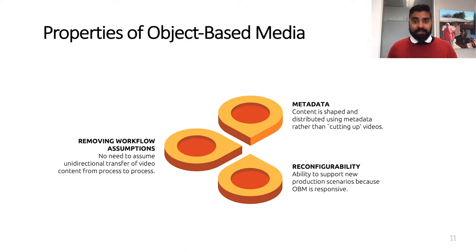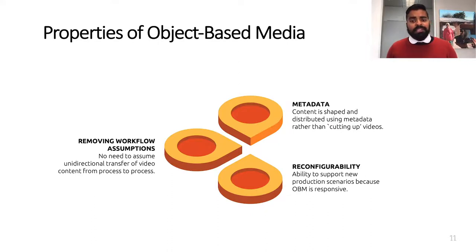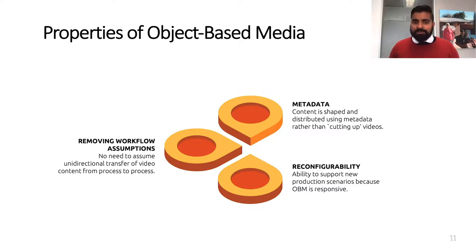Now that we have looked at some characteristics of PV in the field, we turn to some modern media practices. We have picked object-based media, or OBM, as a lens to critique PV practice because it has certain properties useful in this conversation. First, it helps remove workflow assumptions — OBM removes many assumptions of traditional linear production workflows, which rely on unidirectional transfer of video content from one process to the next. Also, OBM considers all content to be equal: through rich metadata, content is shaped and distributed rather than through destructive processes of cutting and chopping. Individual elements of video can be repackaged in myriad forms based on factors such as personal preference, contextual relevance, or the languages required by the viewer.